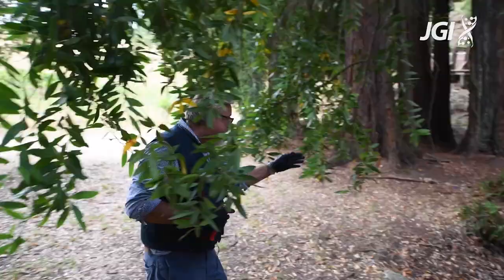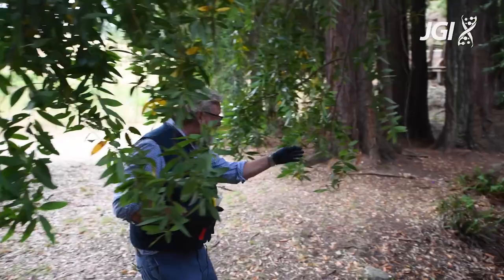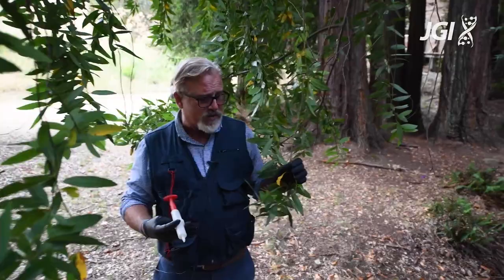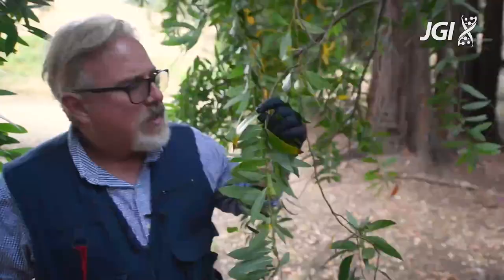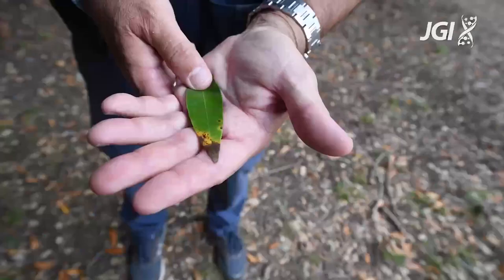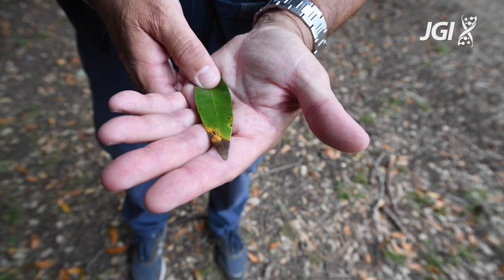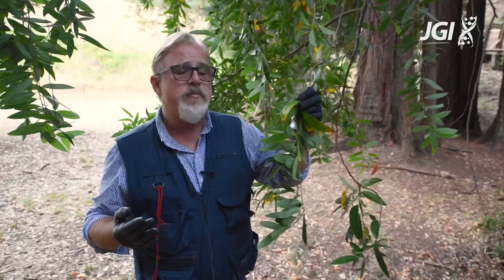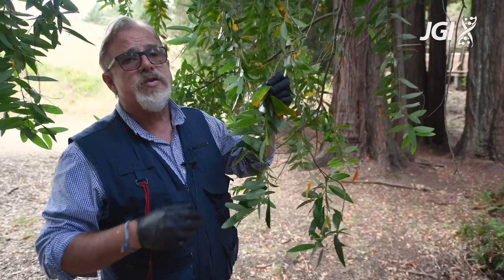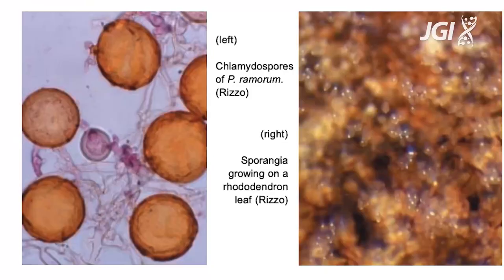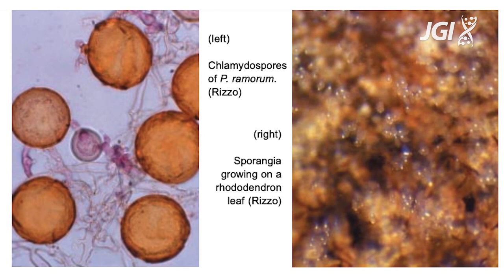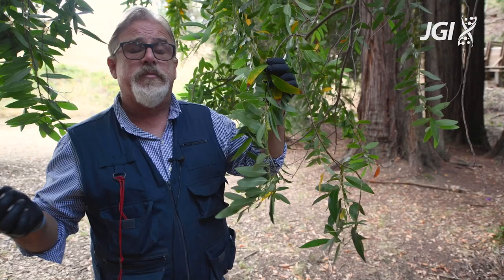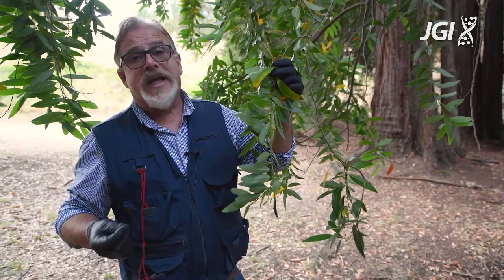This bay laurel is within a few feet from the oak we were standing in front of earlier, and it displays the typical symptoms of sudden oak death — a necrotic lesion, a dead portion of the leaf where water accumulates, clearly visible. The tree doesn't even know it's infected because the lesions are fairly minimal. However, these dark lesions produce a very large number of propagules that become airborne, and when a large number end up on the bark of an oak, that oak can potentially become infected.